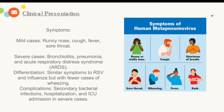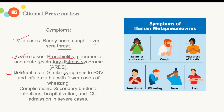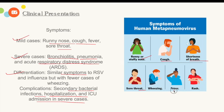The clinical presentation of HMPV: mild cases present with runny nose, cough, fever, and sore throat. In severe cases, it can lead to bronchitis, pneumonia, and acute respiratory distress syndrome. This differentiation can be made from other viruses like RSV and influenza, which cause similar symptoms but with fewer cases of wheezing. Complications include secondary bacterial infections, hospitalization, and ICU admission in severe cases. Symptoms also include shortness of breath, wheezing, and rash.